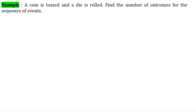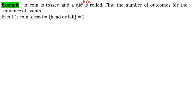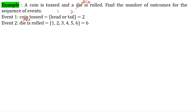Next example: A coin is tossed and a dice is rolled. Find the number of outcomes for the sequence of events. Event 1 — coin toss = head or tail = 2 outcomes. Event 2 — dice is rolled = 1, 2, 3, 4, 5, 6 = 6 outcomes. The total number of outcomes = 2 × 6 = 12.